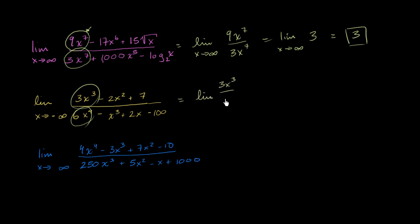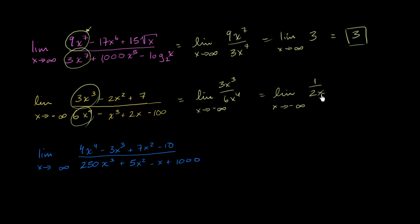So this is going to be the same thing as the limit of 3x to the 3rd over 6x to the 4th as x approaches negative infinity, which simplifies to the limit as x approaches negative infinity of 1 over 2x. The denominator becomes a larger and larger negative number, so this becomes 1 over a very, very large negative number, which gets us close to 0. So the horizontal asymptote in this case is y equals 0.